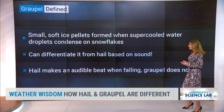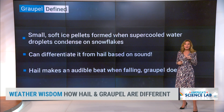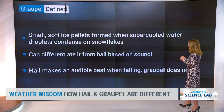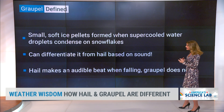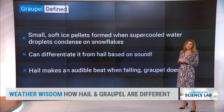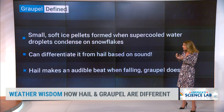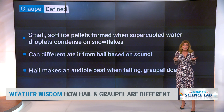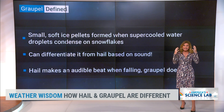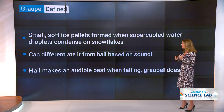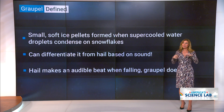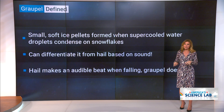When you look at grapple, it's small soft ice pellets — sometimes called snow pellets — when super-cooled water condenses on snowflakes. They're kind of brittle and break really easily. You can actually differentiate them because of the sound. You won't hear grapple falling like you will hear hail. Hail makes an audible noise when it lands on the ground, when it lands on your car. Big difference there.